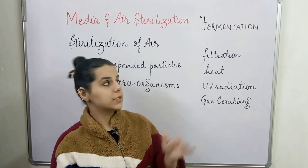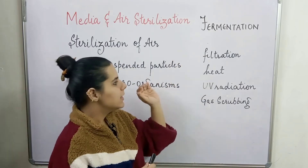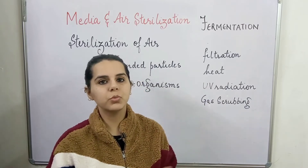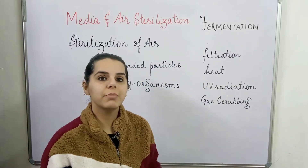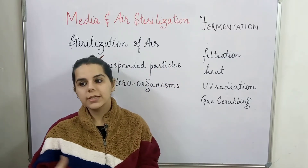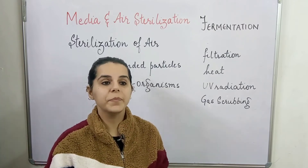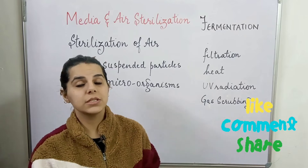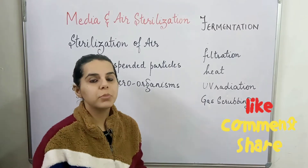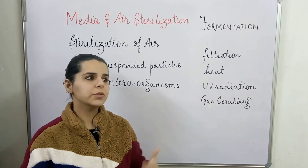One very important method is heat, another is filtration, then UV radiation and gas scrubbing. UV radiation is also used, but the most commonly used methods are either filtration or heat. In earlier days we used heat for sterilizing air, but because it is a very expensive process, we do not use it nowadays. We prefer going for the filtration method.